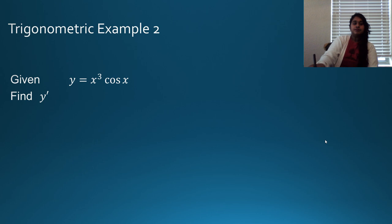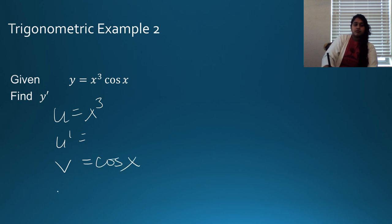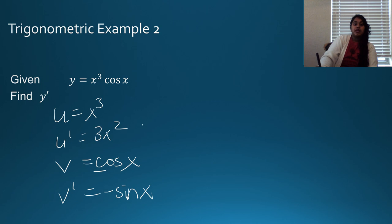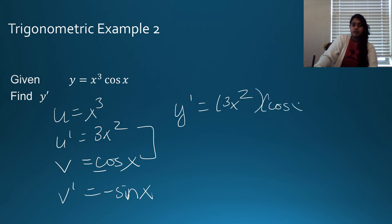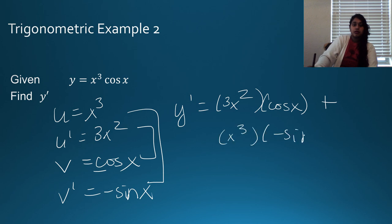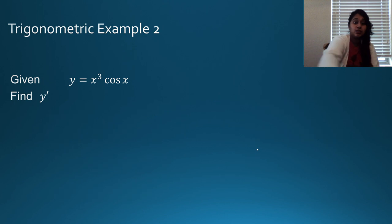Next question: the derivative of my first is 3x squared. The derivative of my second — cosine — is negative sine x because it's a co-function. Then I pair my inside plus my outside. It's easy peasy, lemon squeezy.